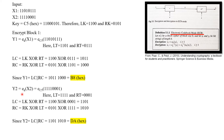Now we will take X2 and encrypt it with the key K. We split the input X2 into its LT and RT. Since LC is equal to LK XOR RT, we get the binary result 1 1 0 1. Also, RC is equal to RK XOR LT, giving us the binary result 1 0 1 0.